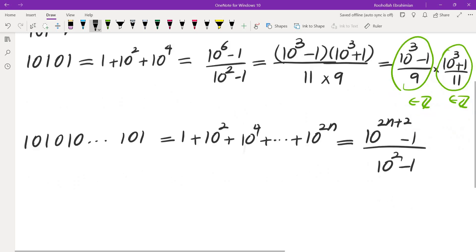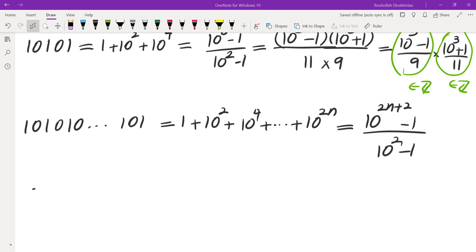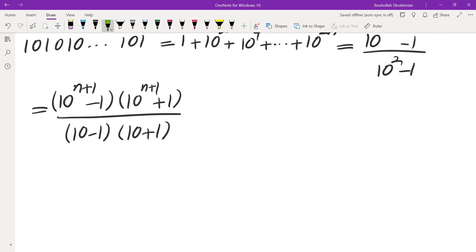This is by the formula for a geometric sum. So, I'm going to factor the numerator that's 10 to the power of n plus 1 minus 1, 10 to the power of n plus 1 plus 1 divided by 10 minus 1 times 10 plus 1. Now, I know that this won't always be an integer, but this guy is only an integer if n plus 1 is odd.